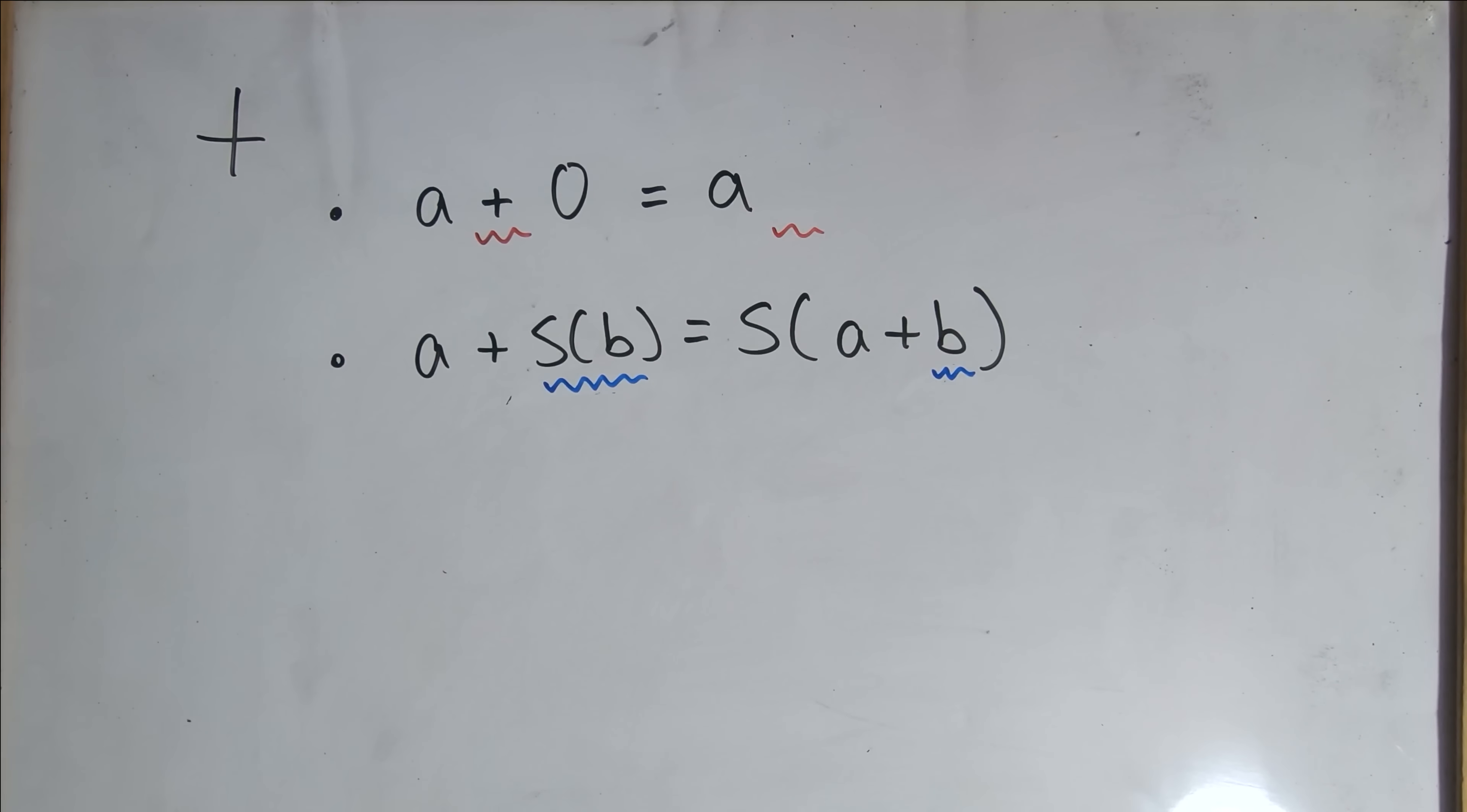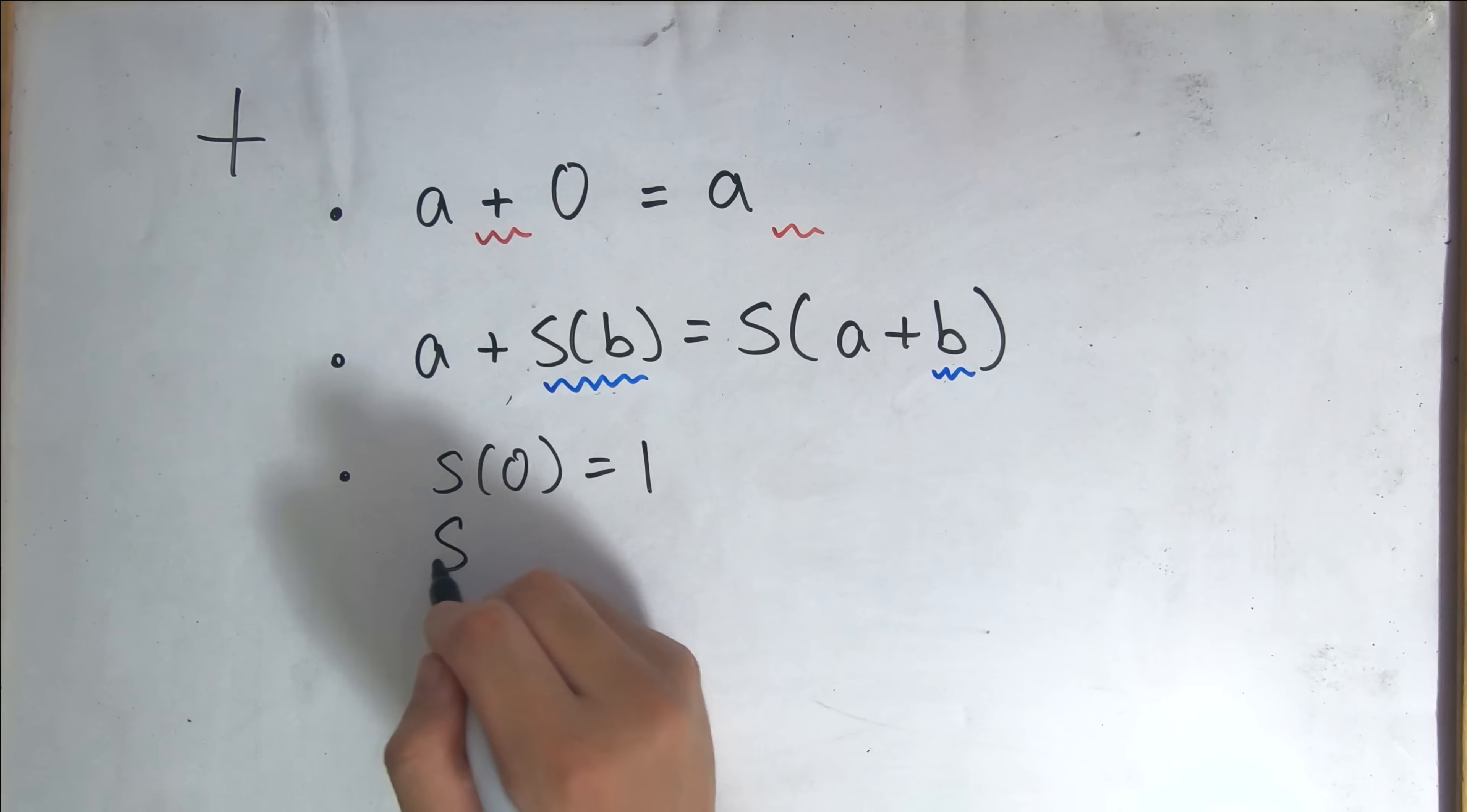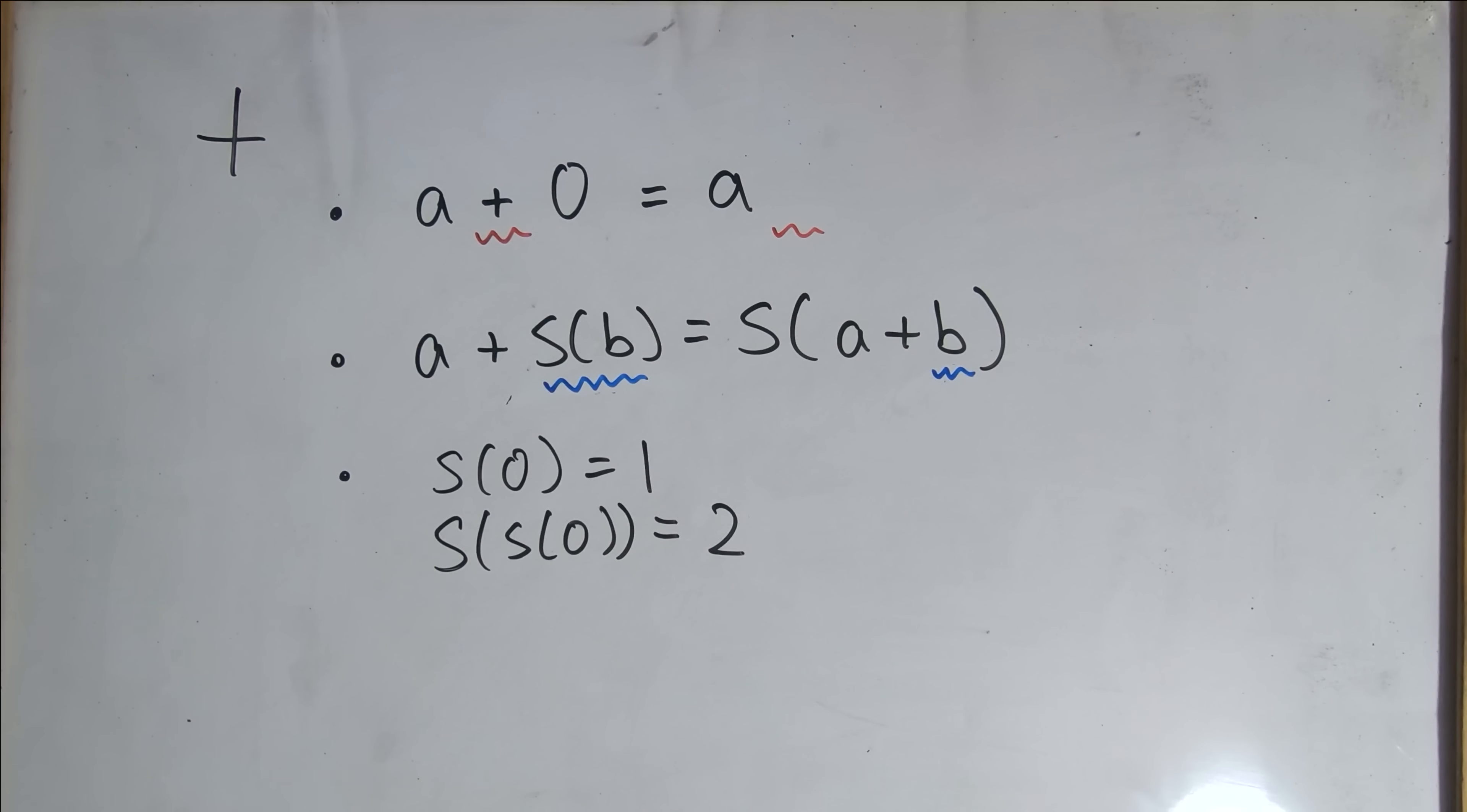Finally, let's give a name for these numbers. Let's say that the successor of zero is equal to one, and the successor of the successor of zero be equal to two. Now we are done with our definitions, and can prove that one plus one equals two.